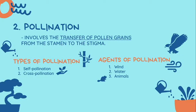The second step is called pollination. Pollination involves the transfer of pollen grains from the stamen, the male part, to the stigma, the sticky tip. There are two types of pollination: self-pollination or cross-pollination. For self-pollination, it's within the same plant — the anther of a flower will pollinate the ovary of the same flower. For cross-pollination, it involves a different plant, but still within the same species. For the job to be done, we have different agents like wind, water, and animals like the bee.